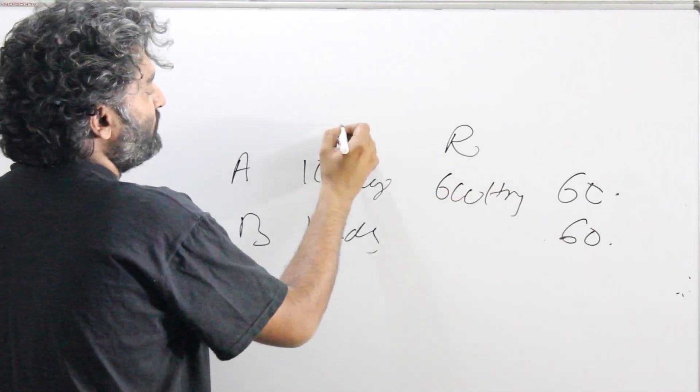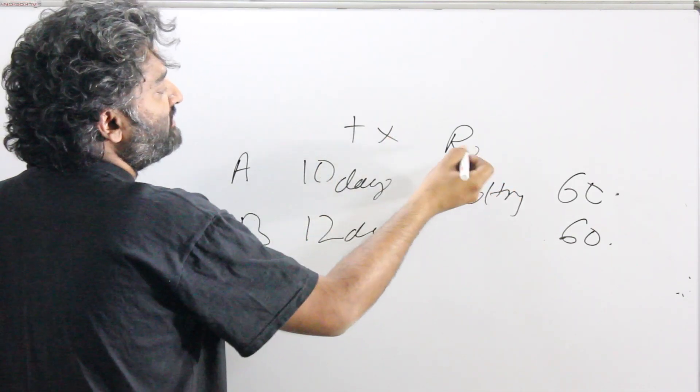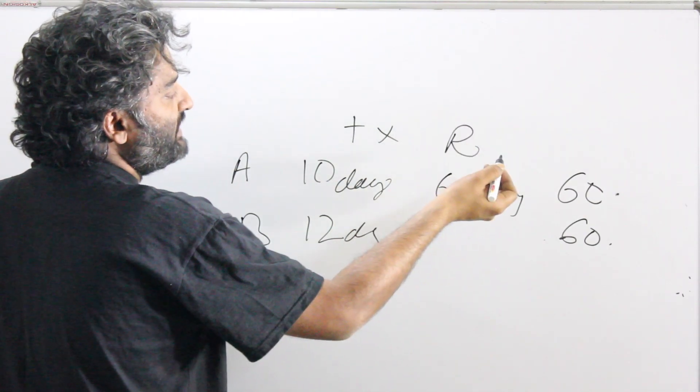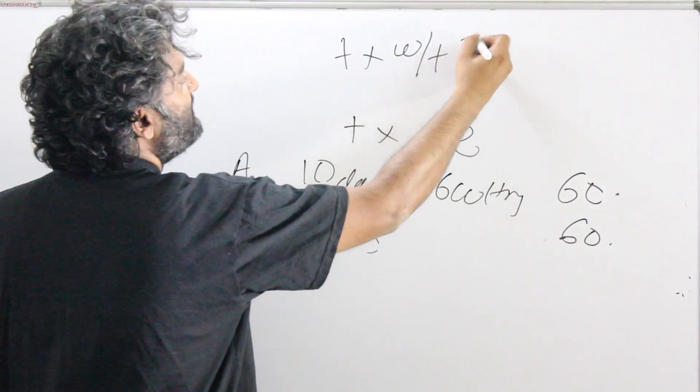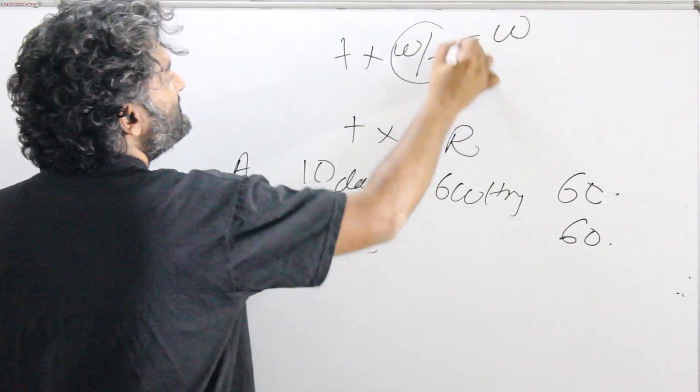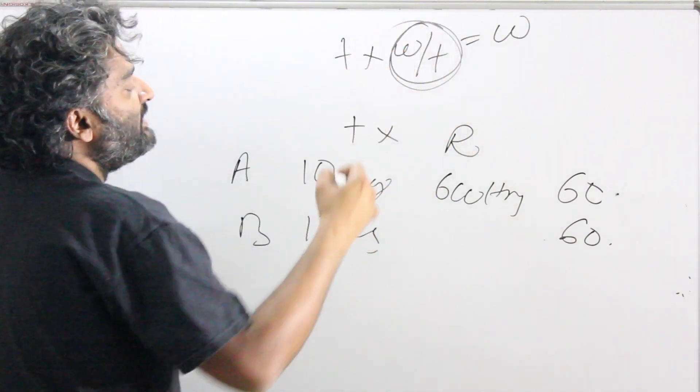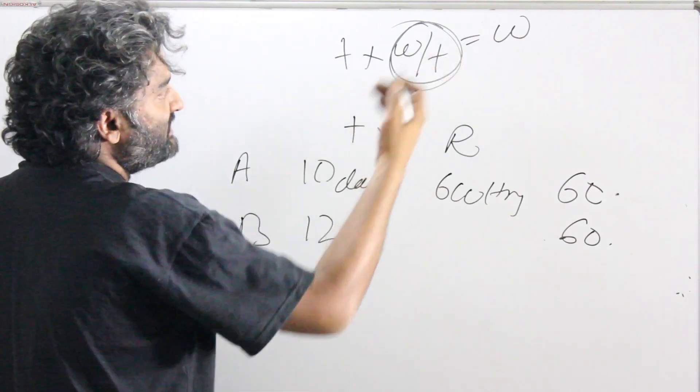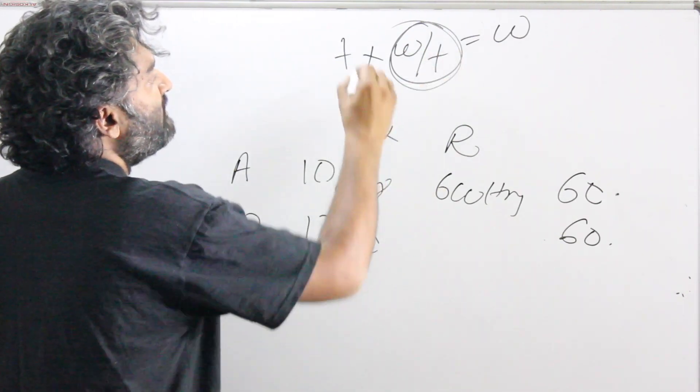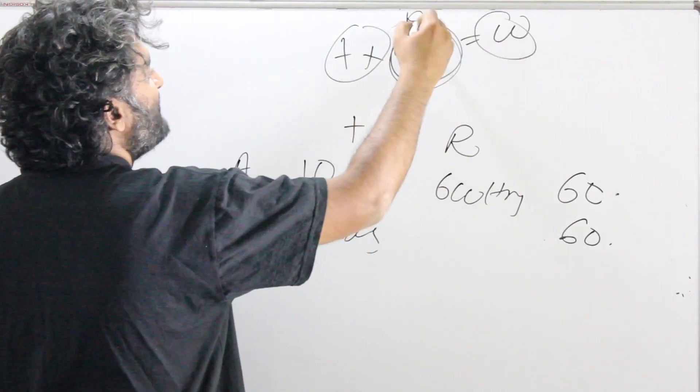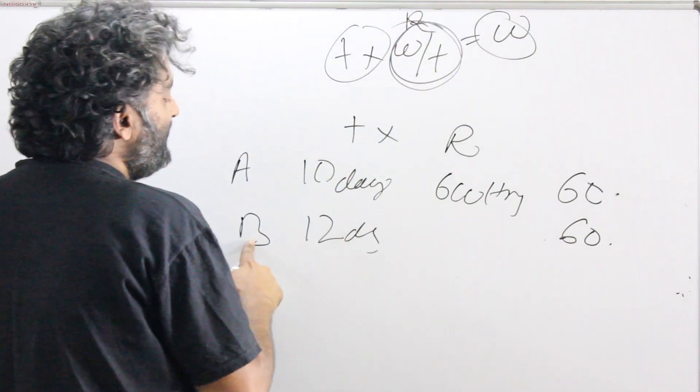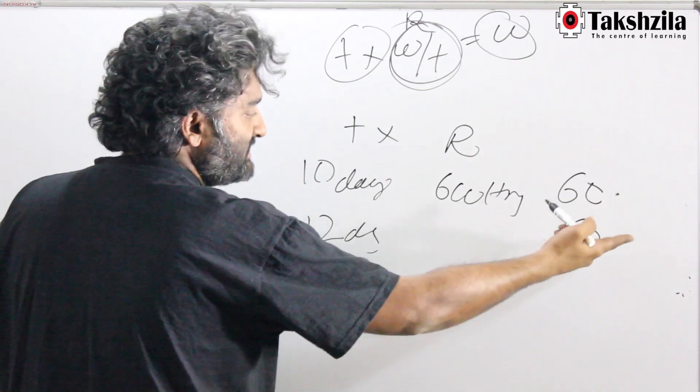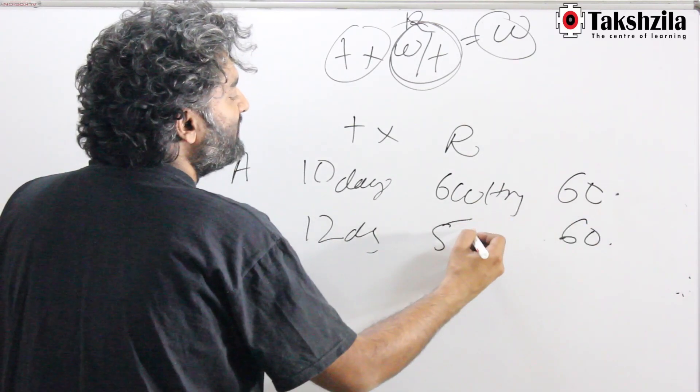If you look at it, time into rate, which is work per time, will give you work. Time into work per time will give you the work. This is a rate. Any numerator by denominator entity is a rate. We are given time, we are given work. We are establishing a work by time relationship. B does the same work in 12 days, 60 trees. So per day, he would be cutting 5 trees.